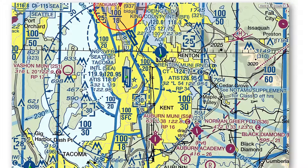Let's look at Boeing Field highlighted in the chart. The control tower frequencies are 120.6 and 118.3. Most smaller airports only have one control tower frequency. The ATIS frequency for Boeing Field is 127.75.